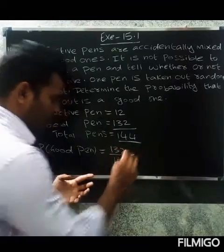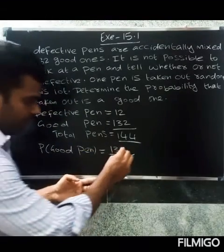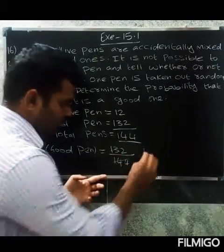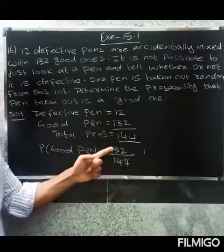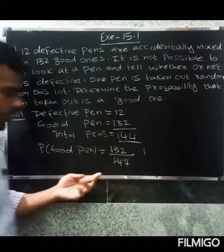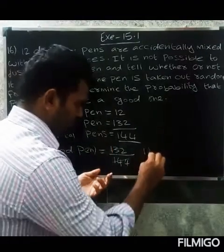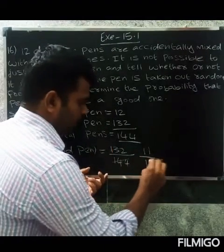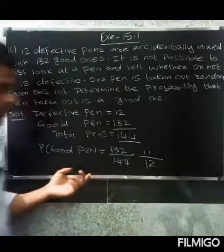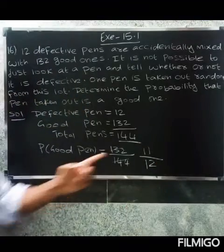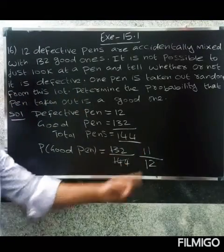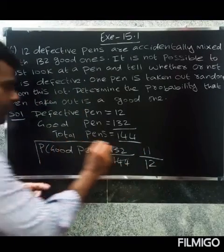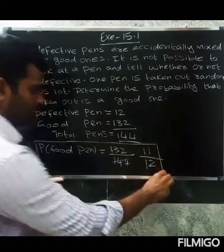We simplify 132 divided by 144. Both are divisible by 12, so we cancel 12 from numerator and denominator. The answer is the probability of a good one equals 11 divided by 12.